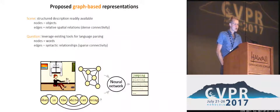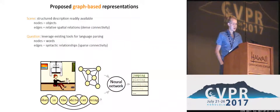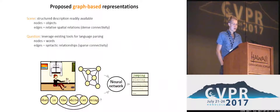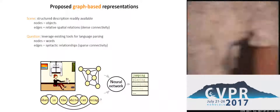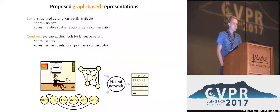The contribution in this work is to use structural representation — using those representations as graphs to represent both the input scene and the input question. For the scene, we are given a list of objects within the scene, typically produced by an object detector, and each object forms a node of the graph. We then define edges between those nodes that represent the spatial relationships between the objects.